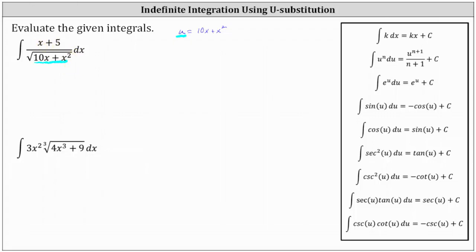The next step, we determine differential du, which is equal to the derivative of 10x plus x squared with respect to x times dx, which is 10 plus 2x times dx. So it may appear as if things are not going to match up like we want, but notice 10 plus 2x factors because there's a common factor of two.